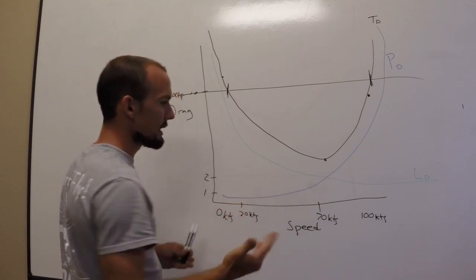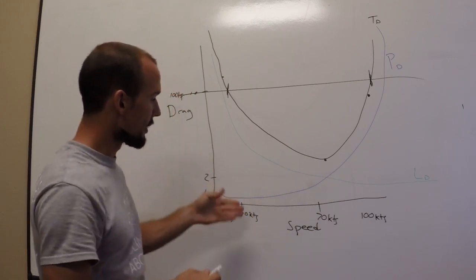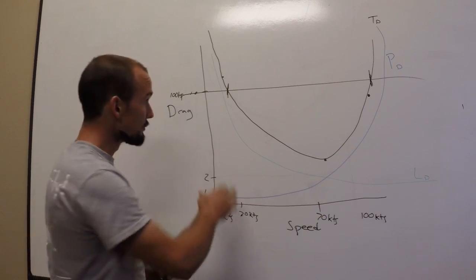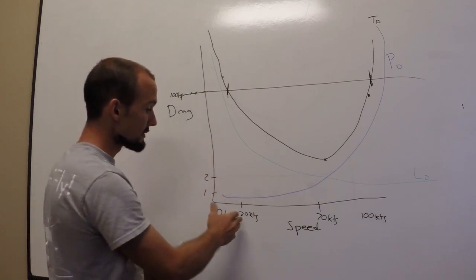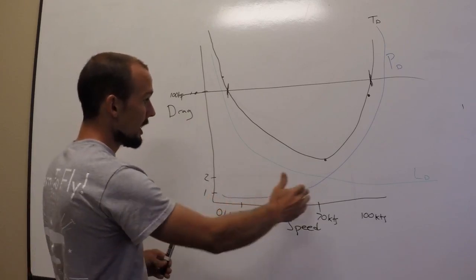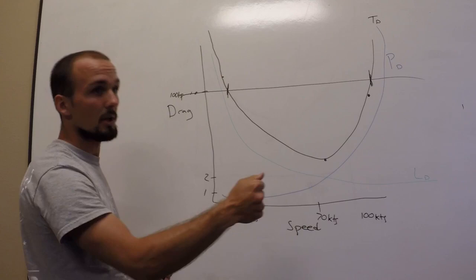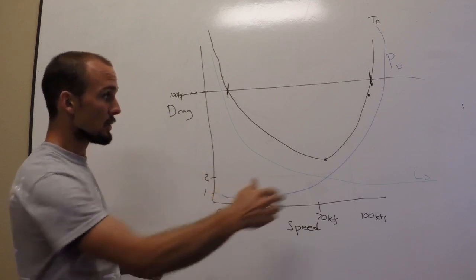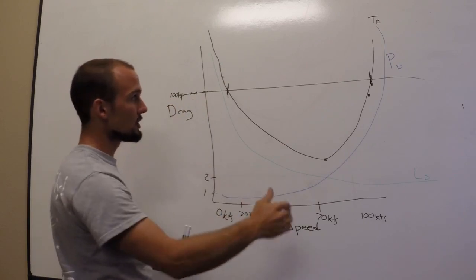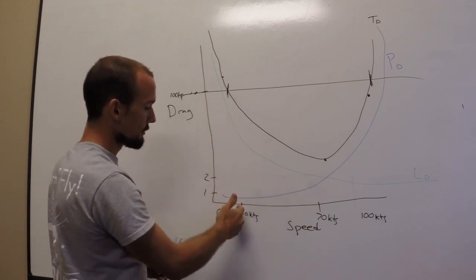So what does this 30 knots represent to us? Well, if you're far enough along in your training and you've already tried some power on stalls, you probably realize that the airplane stalls right around 30-ish knots or so indicated airspeed. We try to fly the airplane slower and slower. Drag builds up. Eventually, our full power, 100 horsepower engine, can't overcome that drag, and the airplane stalls.